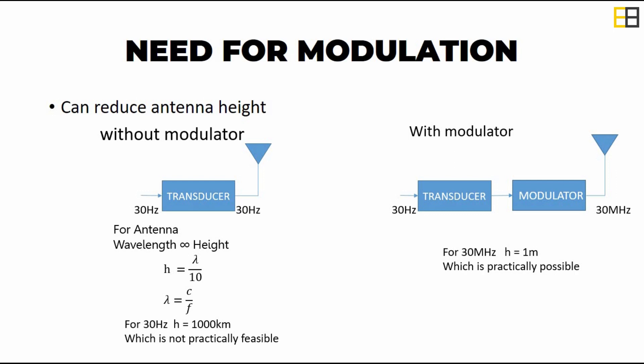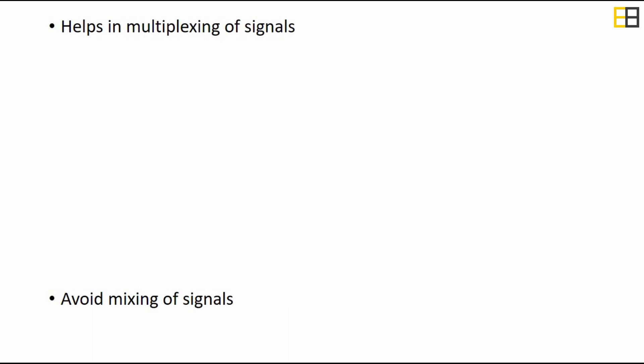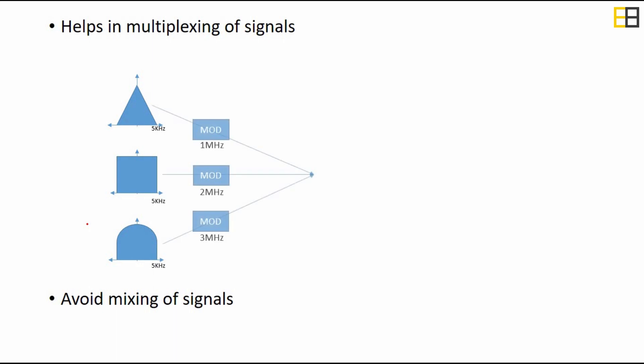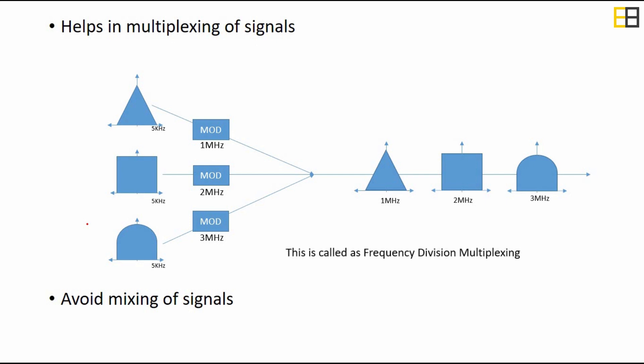Modulation also helps in multiplexing of signals and avoids mixing of signals. Let us consider three types of signals each with 5 kHz bandwidth. If there is no modulator, the signals will overlap each other and information loss happens. Using modulators, each signal can be modulated using three carrier signals of 1 MHz, 2 MHz, and 3 MHz respectively, thus avoiding mixing of signals. This type of multiplexing is called frequency division multiplexing.